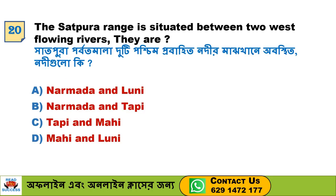Next question: The Satpura range is situated between two west-flowing rivers. They are — Option A. Narmada and Luni, Option B. Narmada and Tapi, Option C. Tapi and Mahi, Option D. Mahi and Luni. Option B, Narmada and Tapi, is the correct answer.